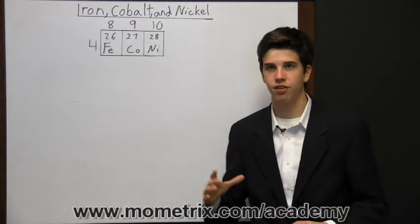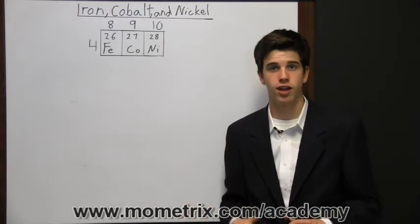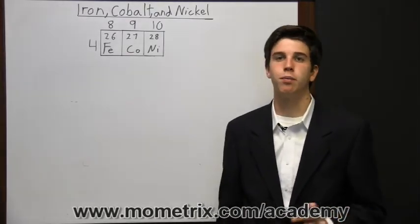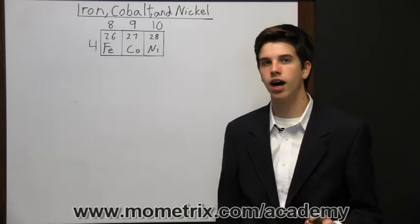These elements are in the same period and have the same number of valence electrons. They all have two valence electrons, but they're in different groups, and so they are in a section of the periodic table called the d-block elements.